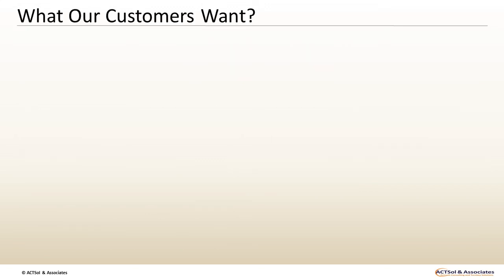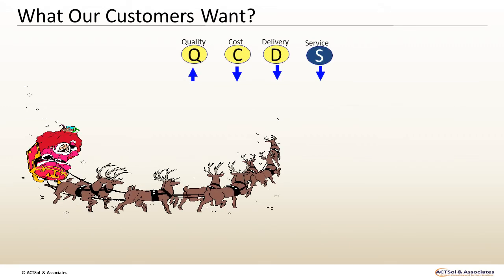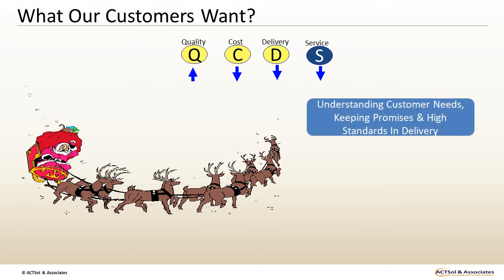The fourth attribute is Service. This refers to the quality of interaction, communication, and experience. Good customer service is about understanding the needs of different customers, keeping promises, and delivering consistently high standards.